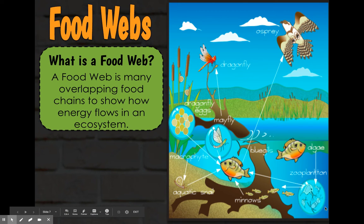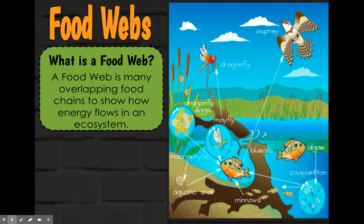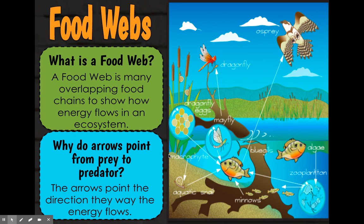Looking here at the zooplankton — this looks like a pond ecosystem. The zooplankton eats the algae, so algae would be your producer. The zooplankton is eaten by — because that's where the arrow goes — and then energy from the zooplankton goes to the minnows and the bluegill when they eat the zooplankton. Then the osprey will eventually eat the bluegill, so the energy is transferred from the bluegill to the osprey. The arrows point from prey to predator because they point in the direction in which energy flows.